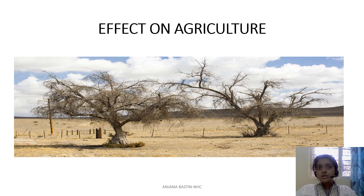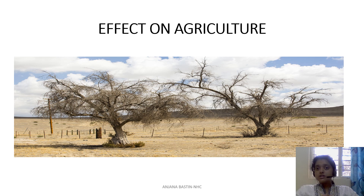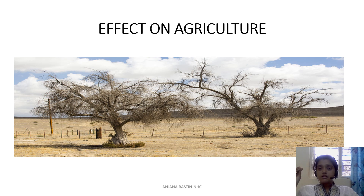Coral reefs, such as the Great Barrier Reef near Australia, are extremely beautiful ecosystems that are home to many organisms. However, because of global warming, these coral reefs start bleaching — a white precipitation forms on them and they slowly start decaying. When coral reefs decay, both the beauty and the habitat for many organisms are lost. This represents a significant effect of global warming on marine ecosystems.